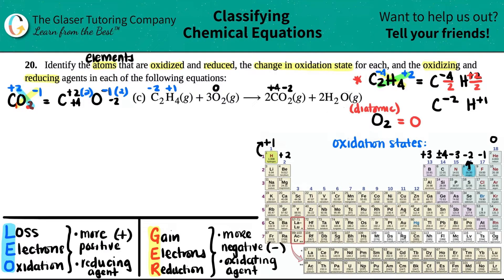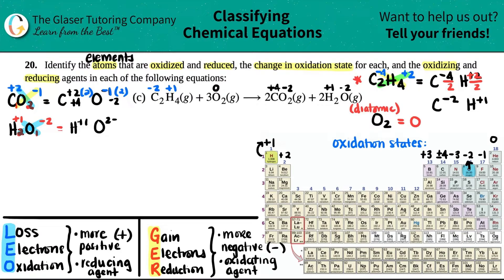Now for H₂O: two hydrogens, one oxygen. The two crisscrosses up telling me oxygen is negative two, and the one crisscrosses up telling me H is positive one. That's actually correct — hydrogen wants to be positive one and oxygen wants to be negative two, so we're good.